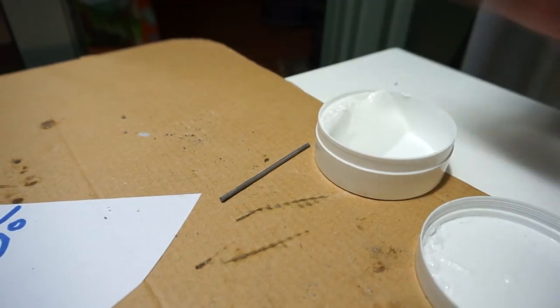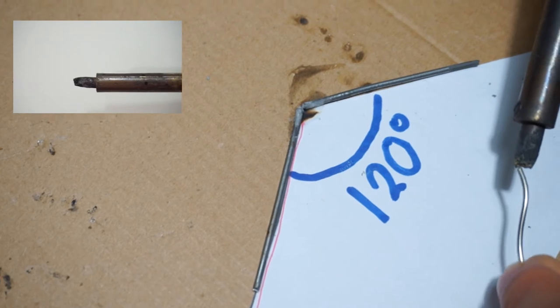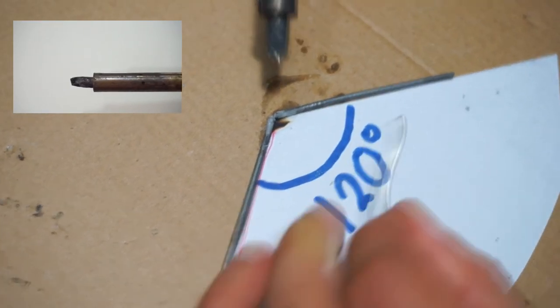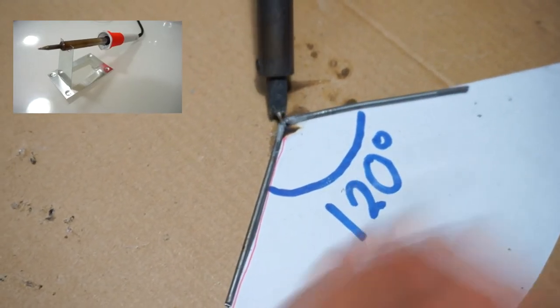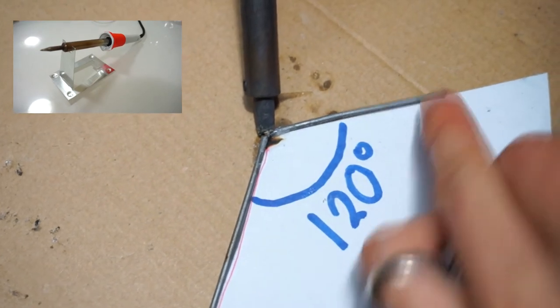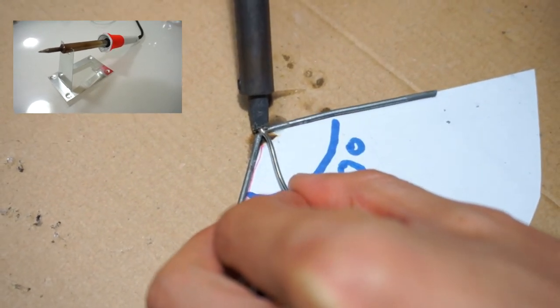I then took the two 9cm wires, dipped them in flux, measured 120 degrees between them and then soldered them together. Again, if you want to see a beginner's guide on how to solder, click on the video or see the description box below.